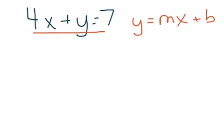When we do that, M will be our slope, and B will be our Y intercept.